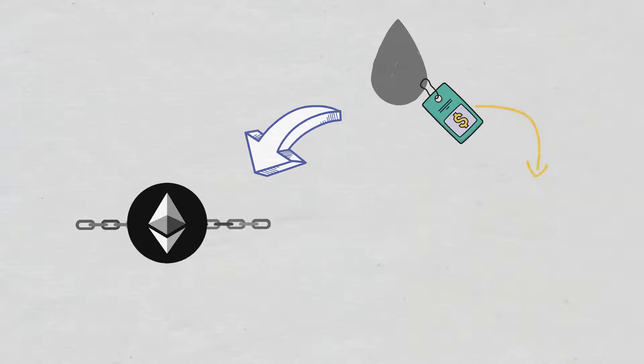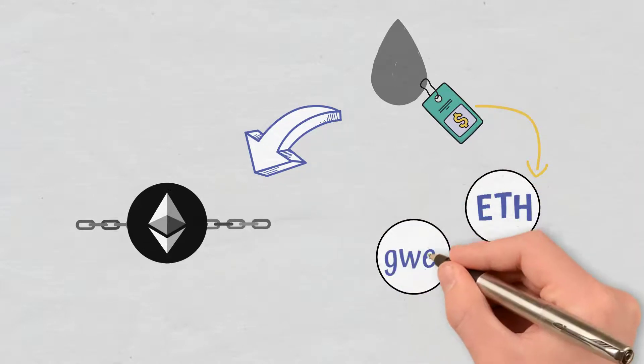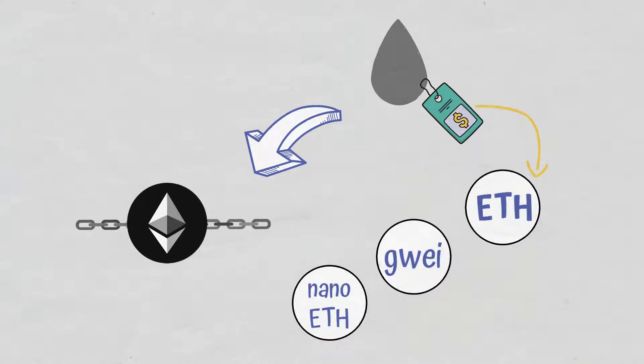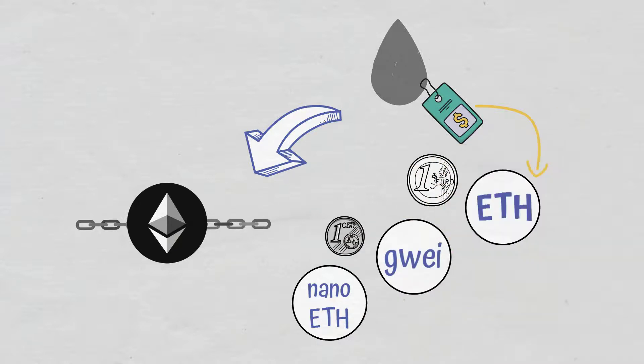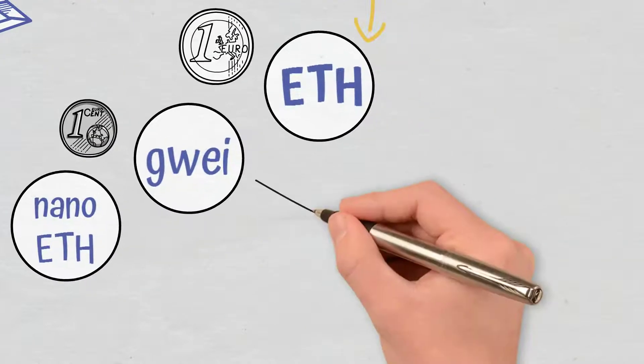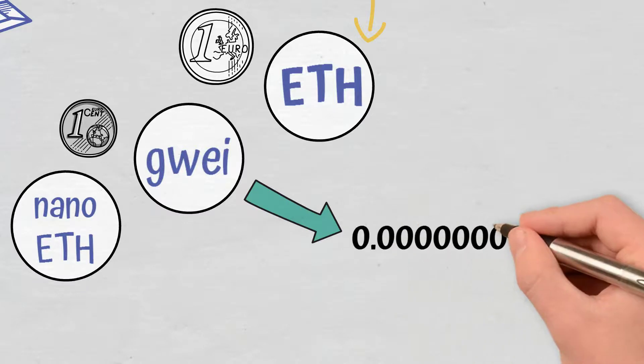That price is estimated in subunits of the cryptocurrency Ether, often called Gwei or NanoEther. To put it simply, the Gwei is for ETH about what the Euro cents are for the Euro. A single Gwei equates to 10 to the power of minus 9 ETH.